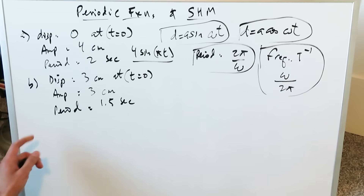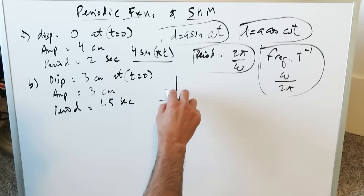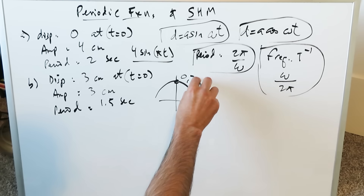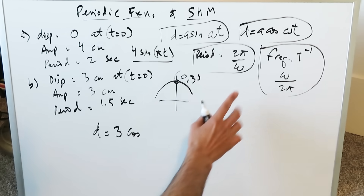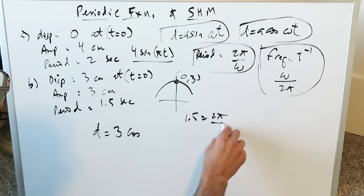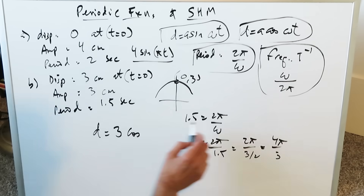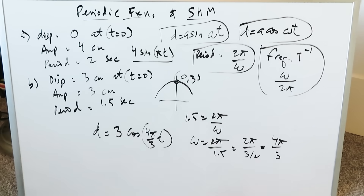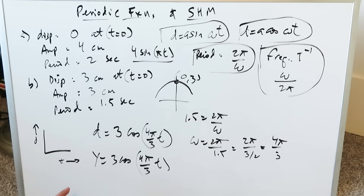Question two: displacement is 3 at a maximum high point at time t = 0. Since we're at maximum positive displacement at t = 0, we use cosine. Amplitude is 3, so d = 3·cos(ωt). Period is 1.5 seconds: 1.5 = 2π/ω → ω = 2π/1.5 = 2π/(3/2) = 4π/3. The equation is d = 3·cos(4π/3 · t), which can also be written as y = 3·cos(4π/3 · t).